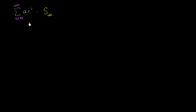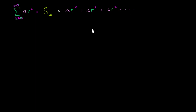We're going all the way to infinity, and if we were to expand it out, this is going to be equal to a times r to the 0, which is just a, plus a times r to the 1st power, plus a times r to the 2nd power, and we could just keep going on and on. I think you get the general idea.